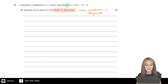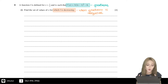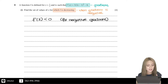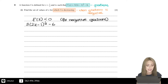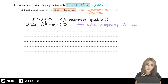f'(x) is the gradient function. So we want to know when the gradient function is negative, i.e., when f'(x) is less than 0. That corresponds to 3 multiplied by (2x minus 1) to the power of a half, minus 6, being less than 0. So all we need to do is solve this inequality for x.